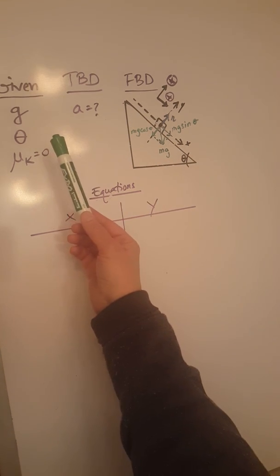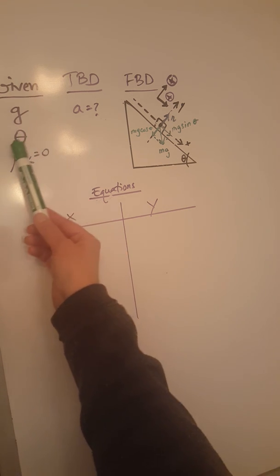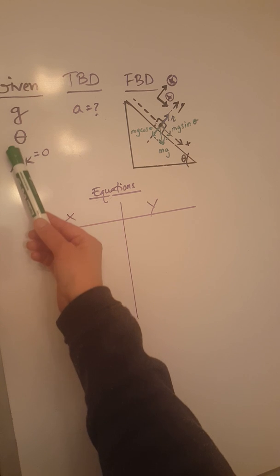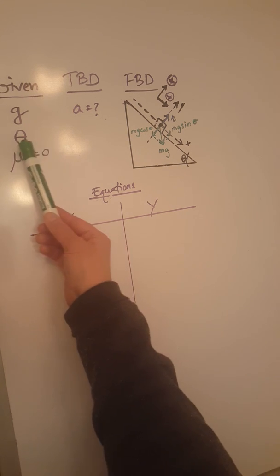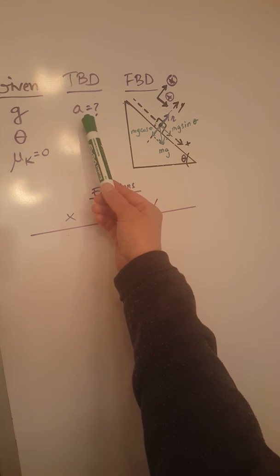The given in this problem are the acceleration due to gravity and the angle of inclination, and also the fact that this inclined plane, this ramp, is smooth, so therefore there is no friction and we are looking to determine the acceleration.